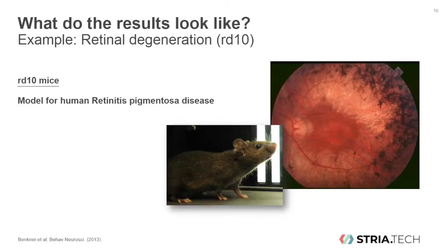I would like to introduce how such optomotor data looks. The example I will use is data from a mouse line with retinal degeneration, the so-called RD10 mouse line. In these mice, photoreceptors die due to a mutated rod-specific gene. Over time, these mice become blind.